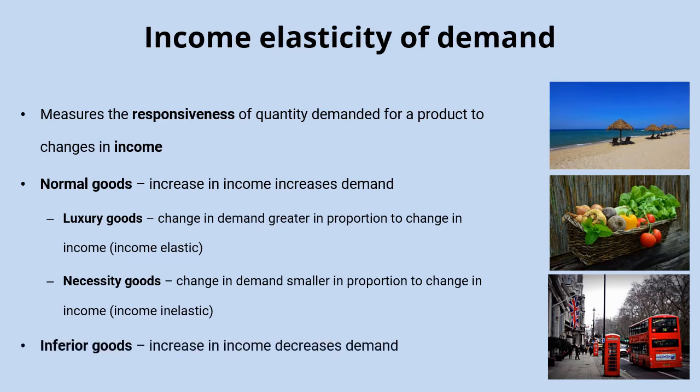Finally, you have inferior goods — goods where income goes up and the amount consumers buy decreases in response. For example, with bus travel, if people's income rises they're more likely to travel by taxi or afford to run a car instead, so the demand for those goods goes down.